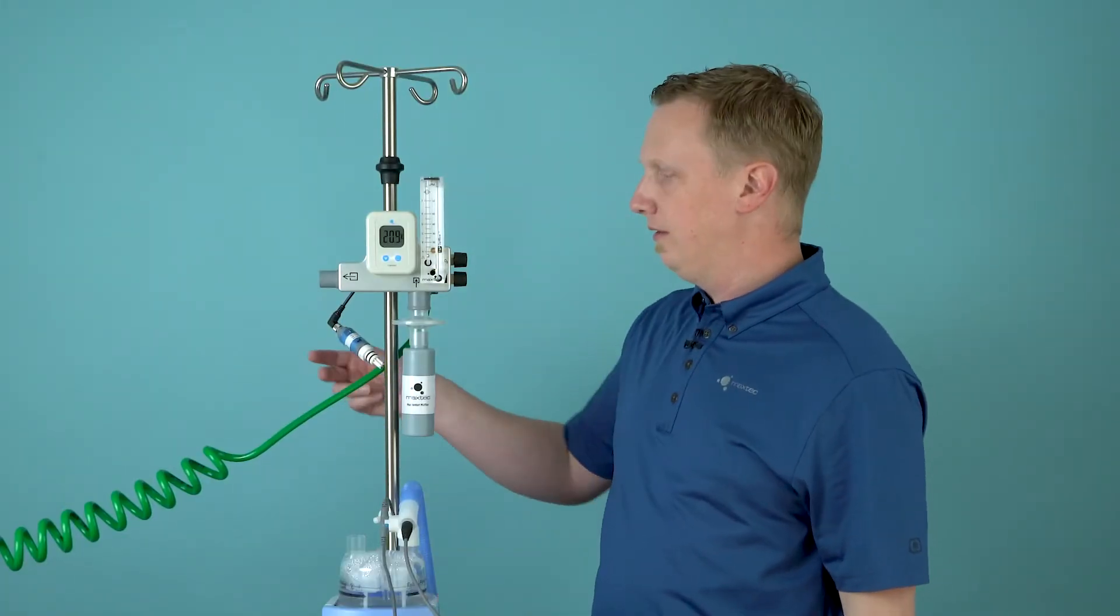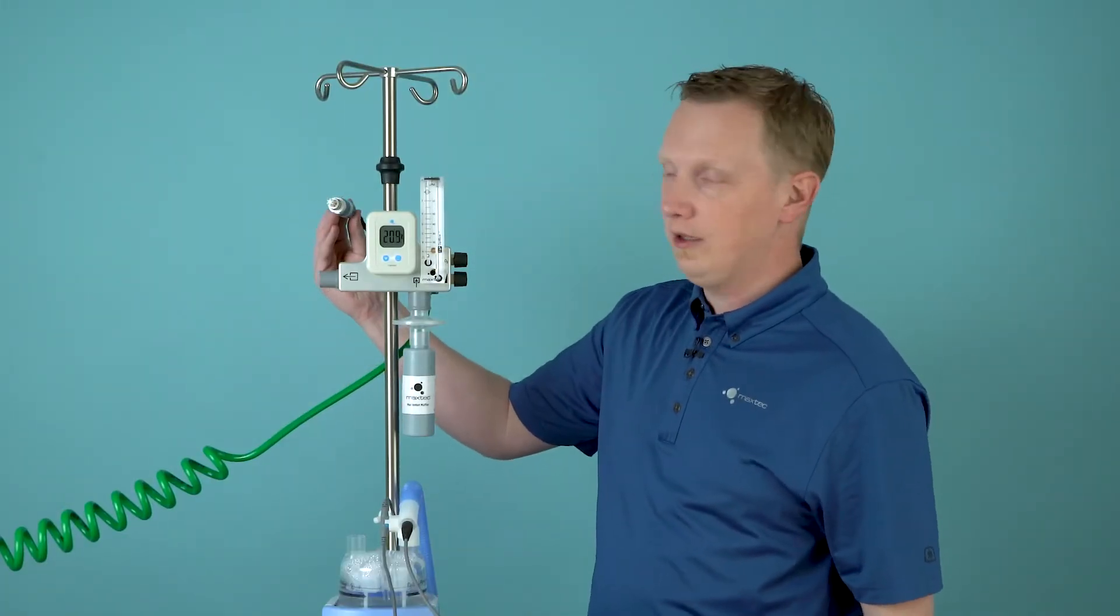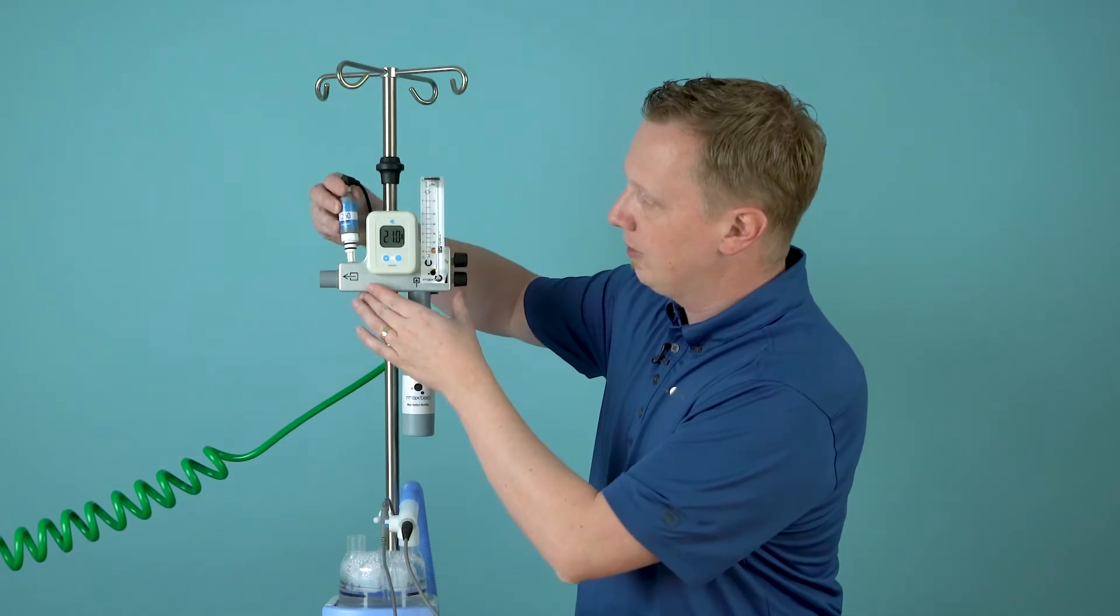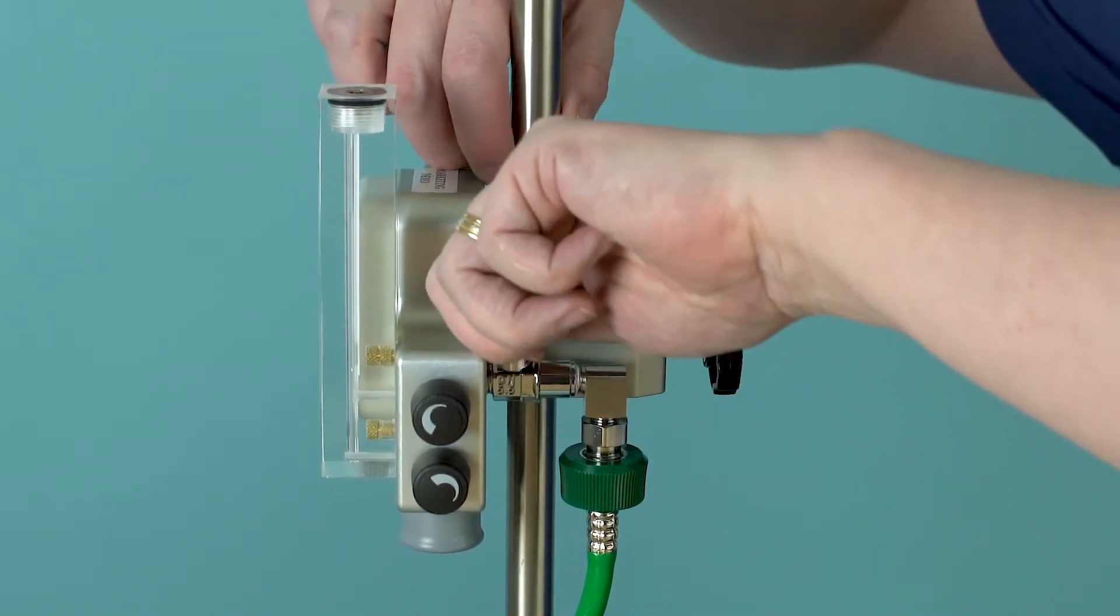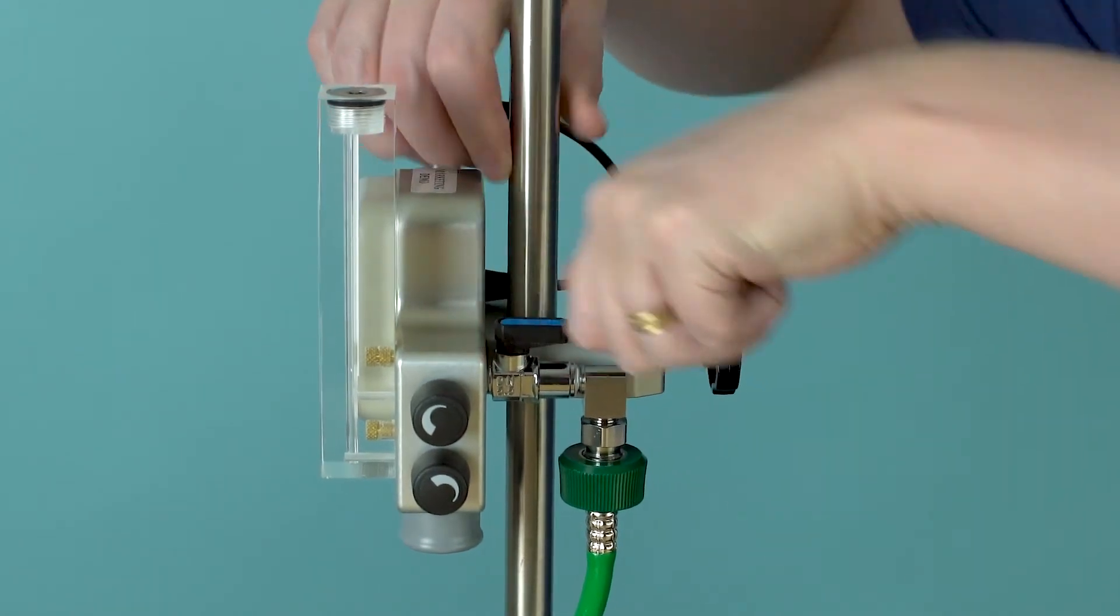Once that clears out, the sensor has been calibrated to room air and can be returned to the Max Venturi. You can now turn your oxygen source back on again and the device is ready for use.